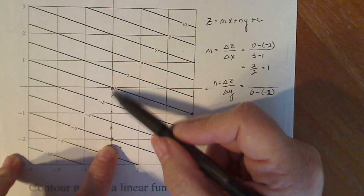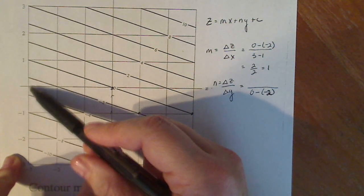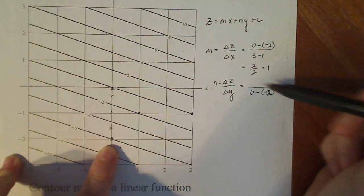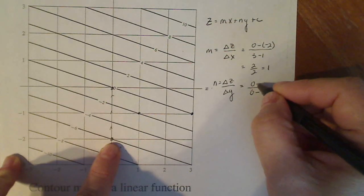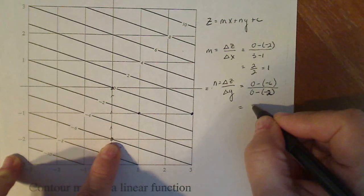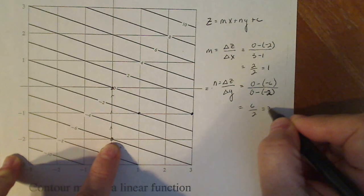Now, if we do the change in Z, the change in Y is the Y values, these values here. So zero minus negative two. If I want to do the change in Z, it's gonna be zero minus negative six, which will give me six over two, which is three.